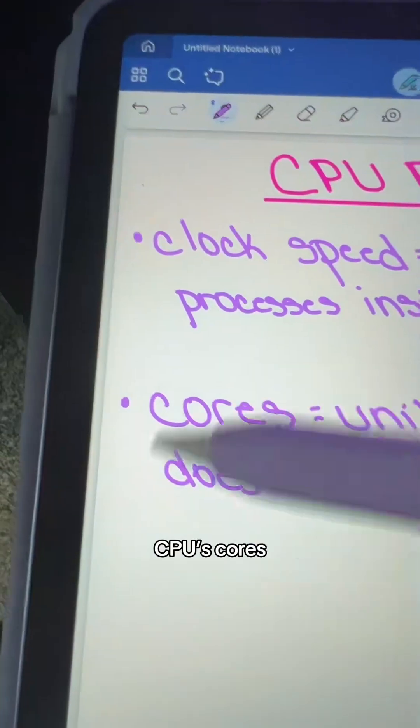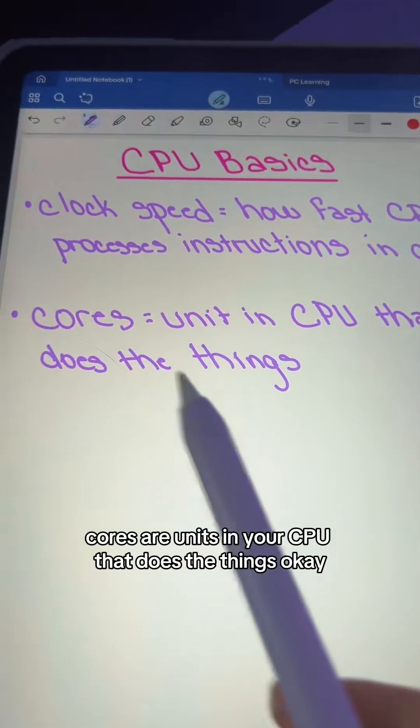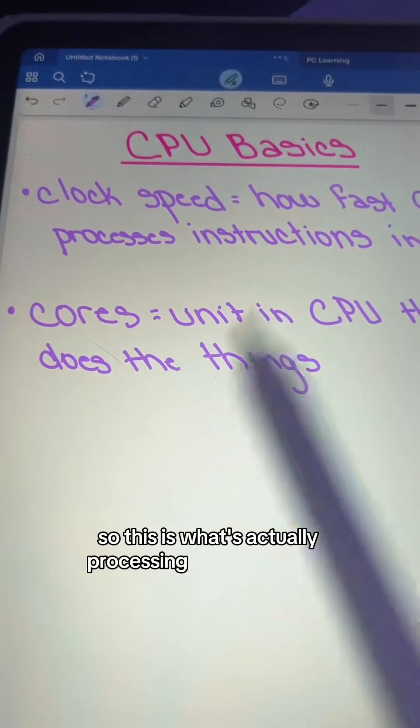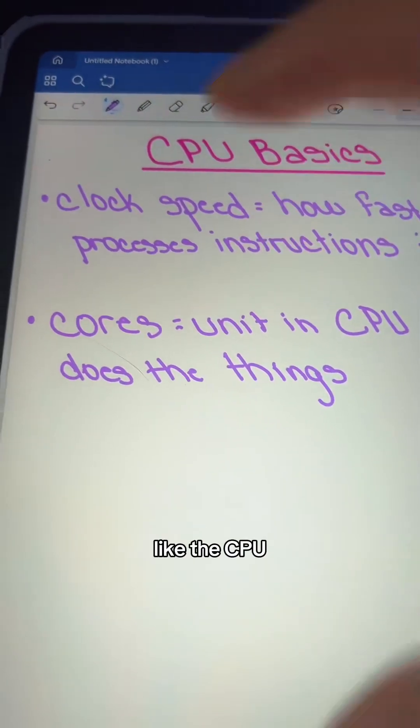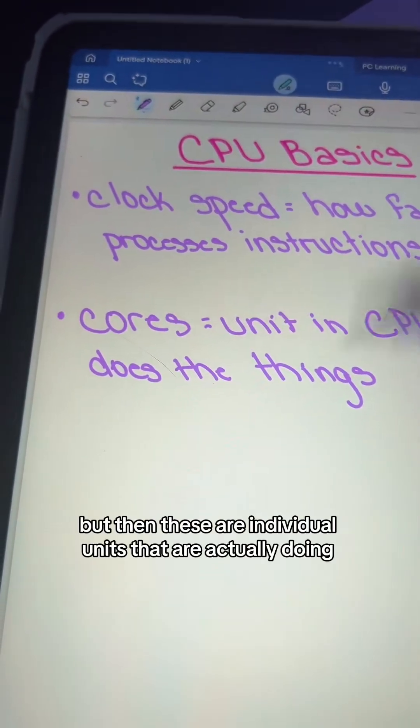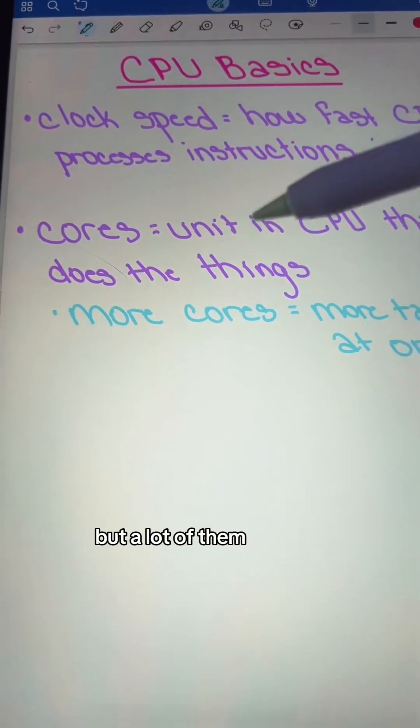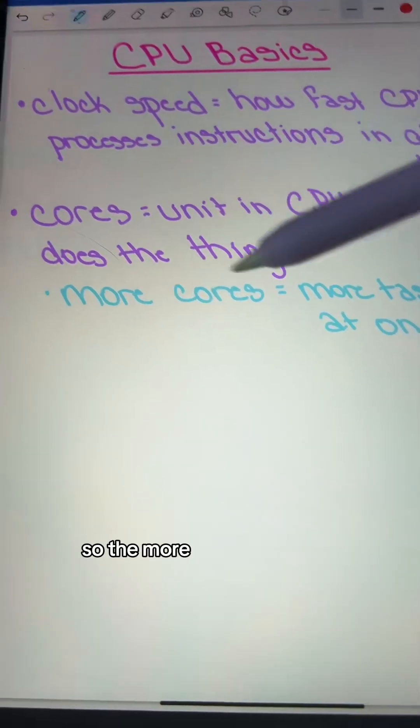The next thing to think about is your CPU's cores. Cores are units in your CPU that does the things. So this is what's actually processing that information. Like the CPU as a whole processes information, but then these are individual units that are actually doing the work. Some CPUs are just one single core, but a lot of them are also multi-cores. So the more cores you have,